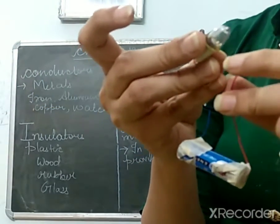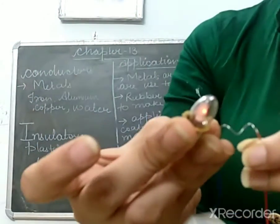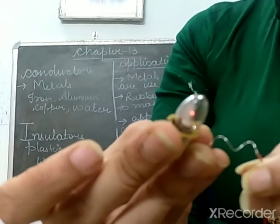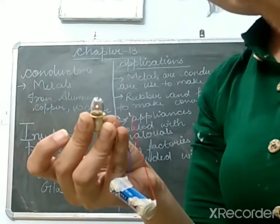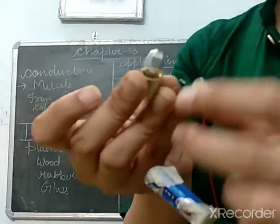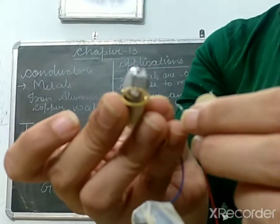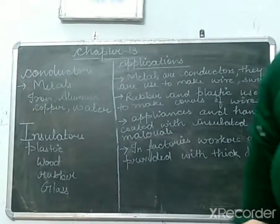Again, I am joining this to confirm. Again, it starts glowing. So it means this plastic is an insulator and this metallic wire is a conductor.